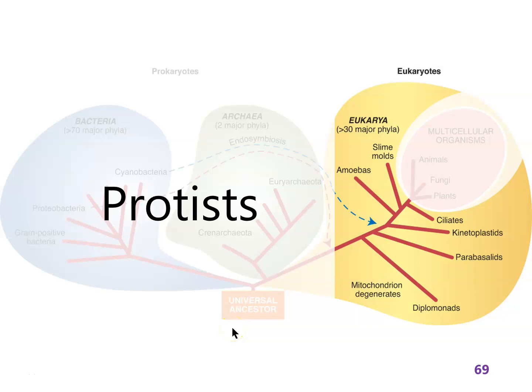It seems we've left the world of fungus behind. Here and now we're looking at protists. Protists are all the eukaryotes that are single celled and not fungal. They range from algae, which are basically single celled green plants, to super weird, nightmarish single celled creatures.